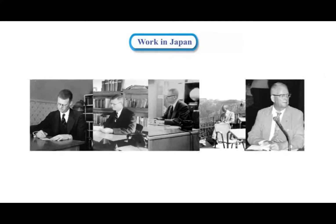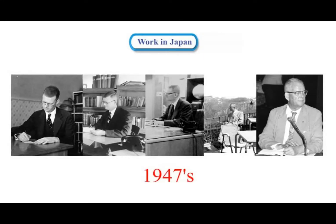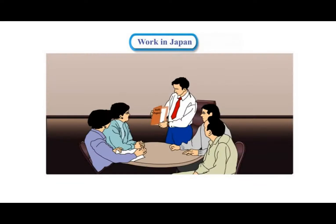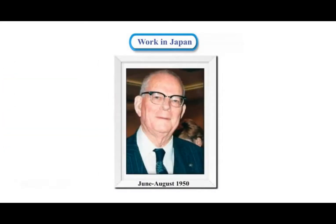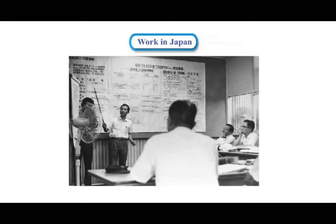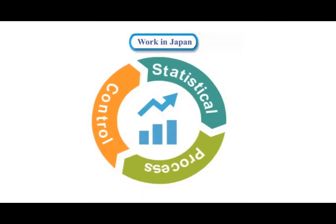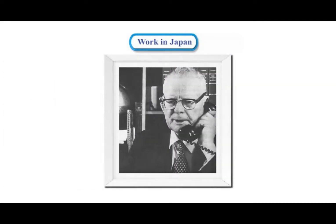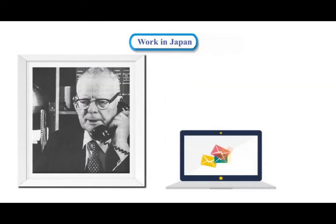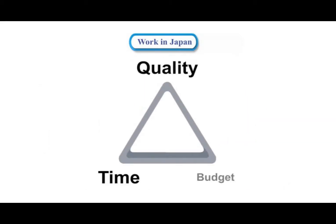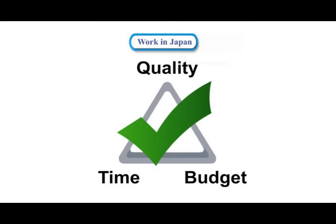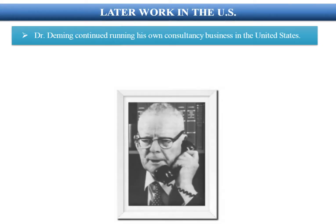After World War II, in 1947, Deming was involved in early planning for the 1951 Japanese Census by the Department of the Army. During June to August 1950, Deming trained hundreds of engineers, managers, and scholars in statistical process control and concepts of quality. Deming's message to Japan's chief executives was: improving quality will reduce expenses while increasing productivity and market share.